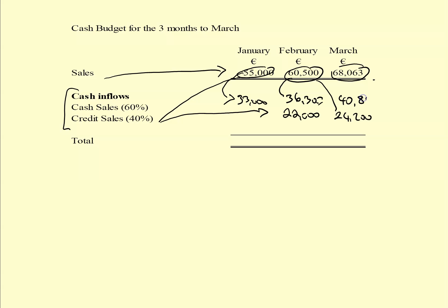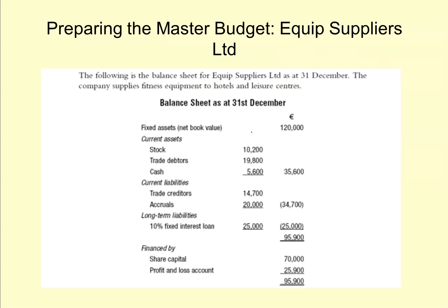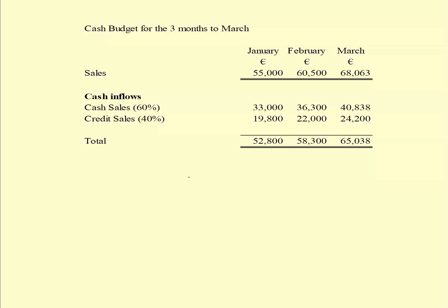Of March sales, 60% comes in March which is 40,838. The balance won't come in until April, so at the 31st of March we will have accounts receivable or debtors. The credit sales figure relates to goods sold in December of last year - we get paid in January. That figure is in the balance sheet: at 31st December we have debtors of 19,800, representing goods sold in December, to be paid in January.